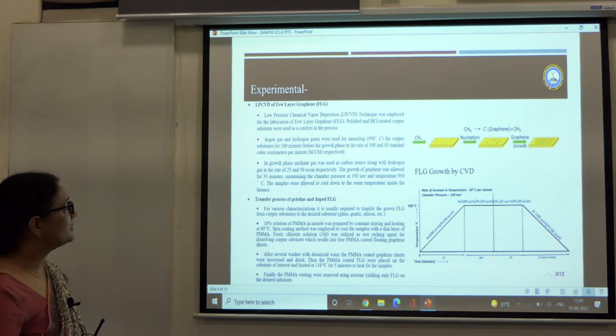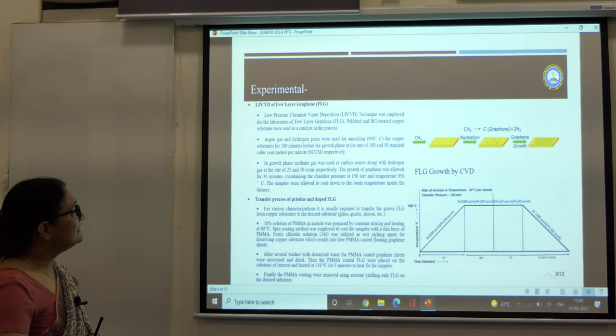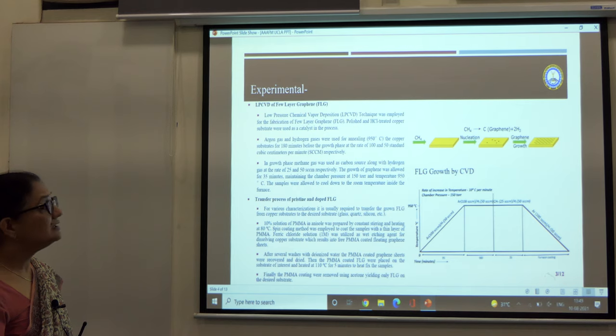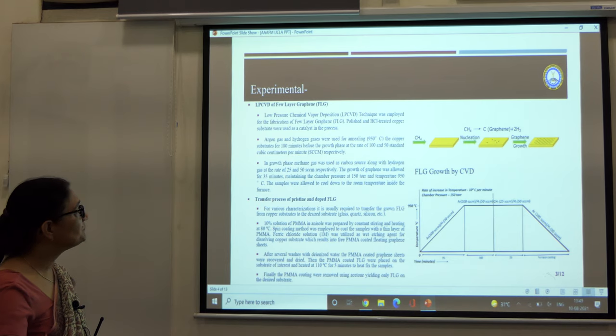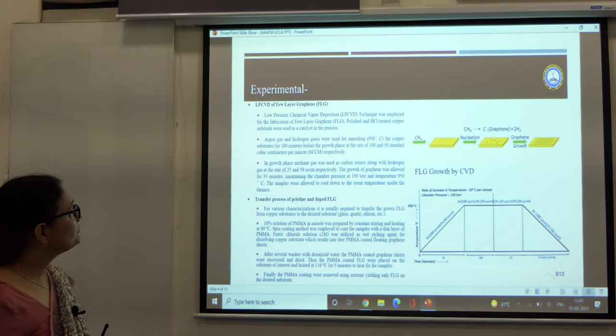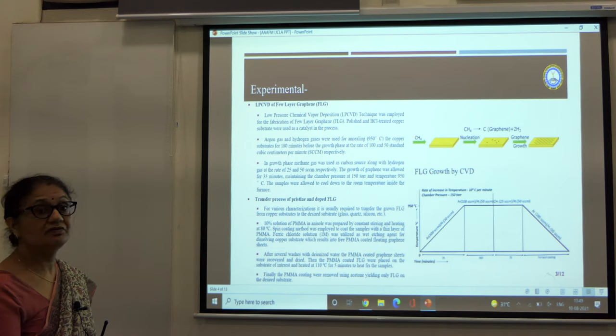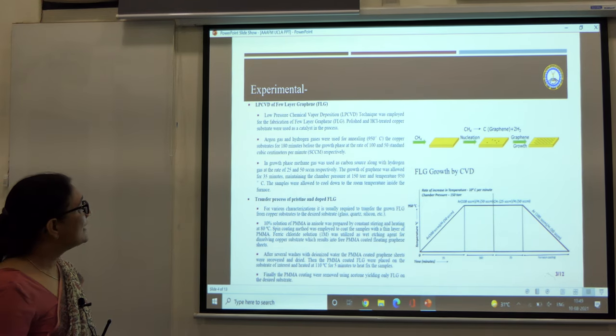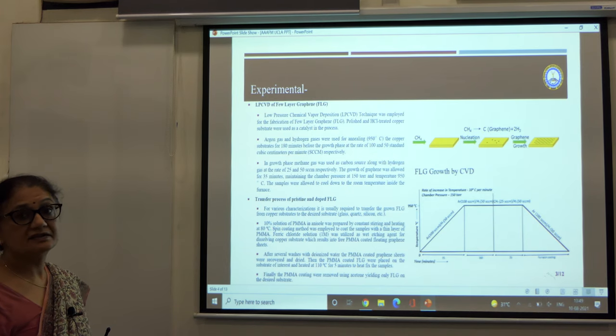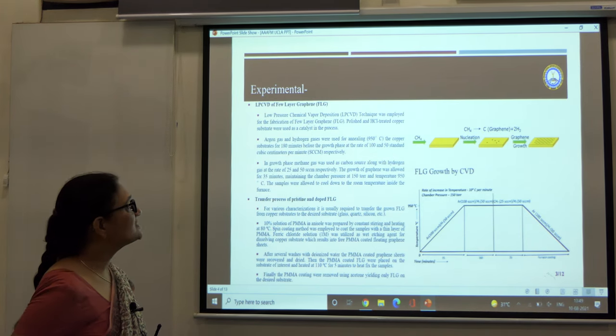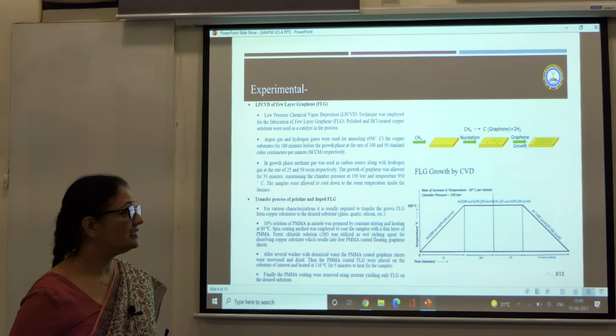The methane gas was used as the carbon source along with the hydrogen gas at the rate of 25 and 50 SCCM respectively. The growth of graphene was allowed for 35 minutes maintaining the chamber pressure at 150 torr and the temperature at 950 degrees centigrade. The samples were allowed to cool down to room temperature inside the furnace.